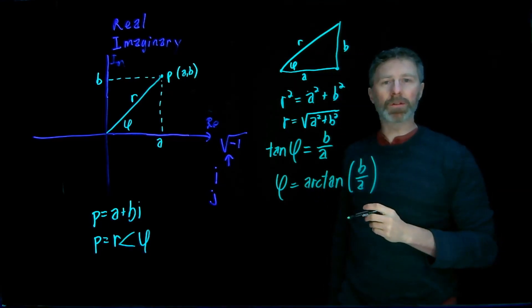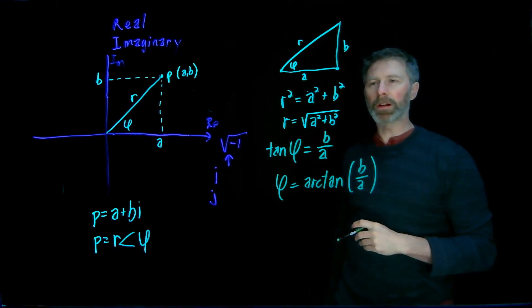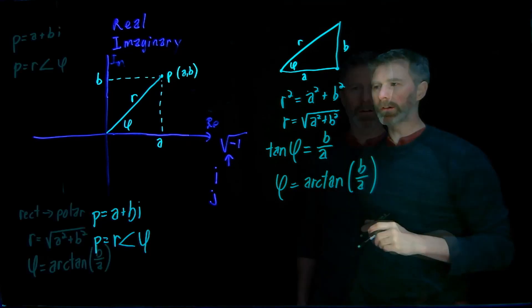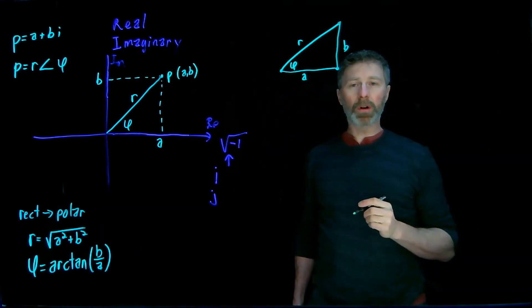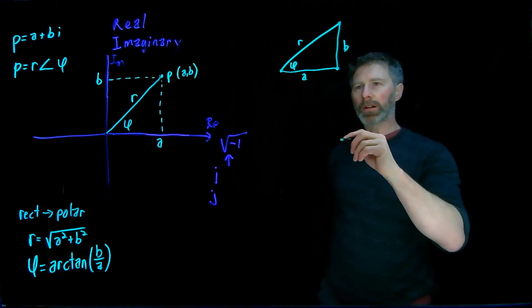So a very simple conversion. If you already have the rectangular coordinates, it's very easy to convert from the rectangular or the Cartesian coordinates into the polar coordinates. So what if you want to go the other way? What if you already know the polar coordinates, and you want to figure out the rectangular or the Cartesian coordinates? Well, let's take a look at the right triangle again.